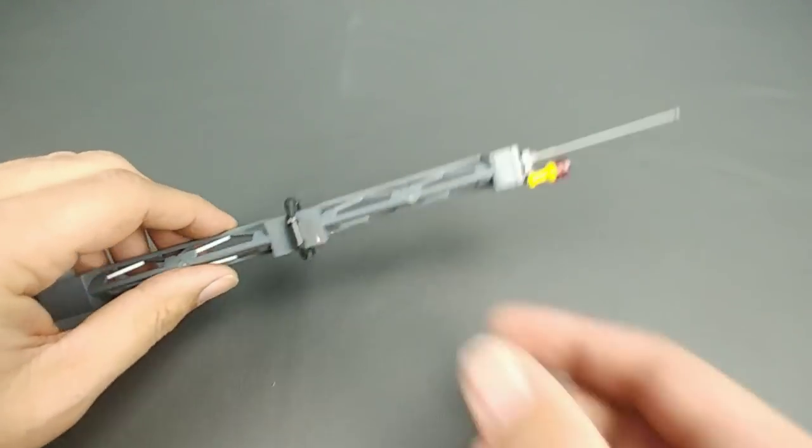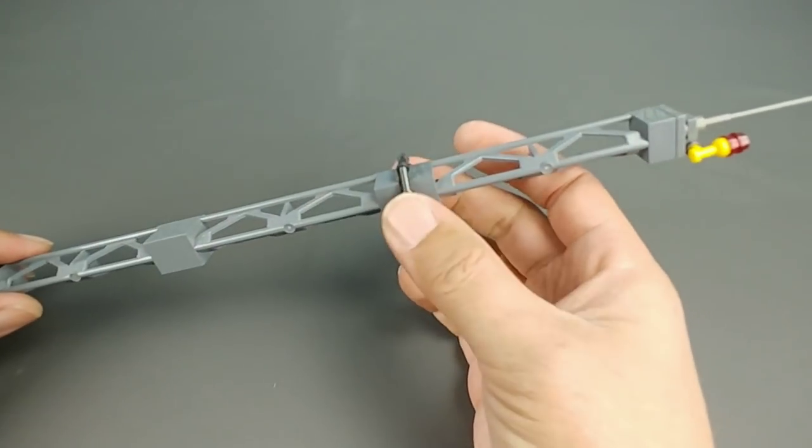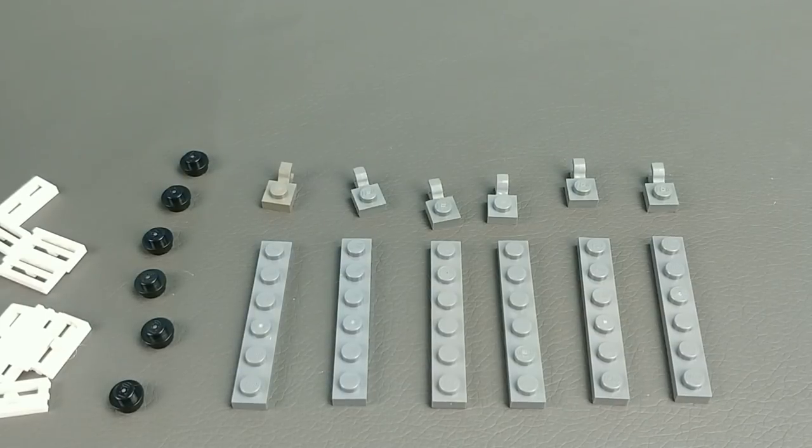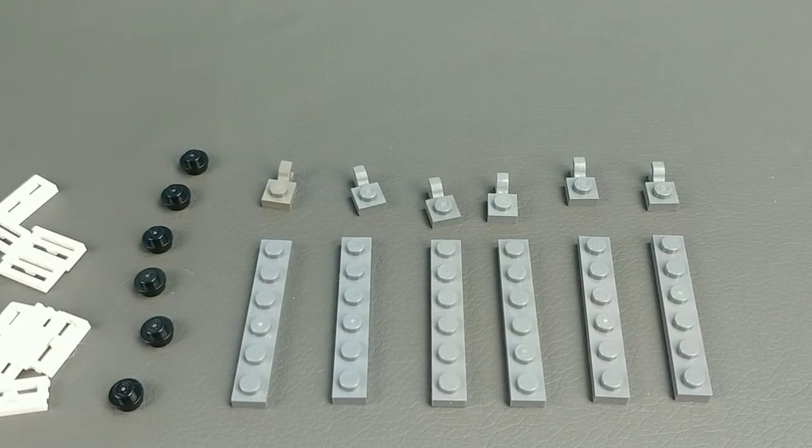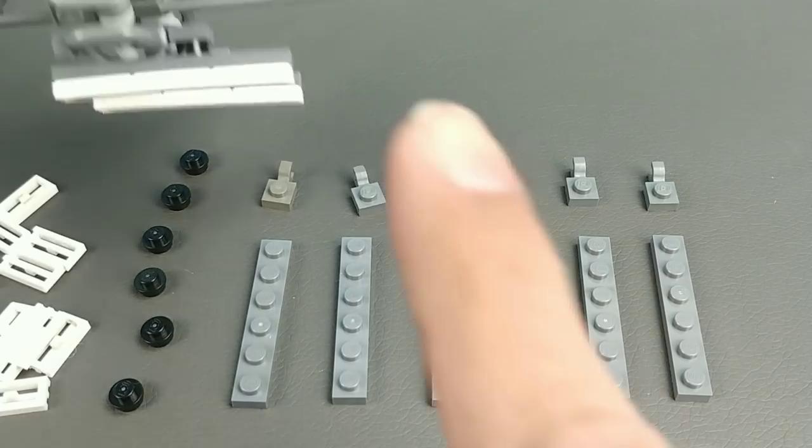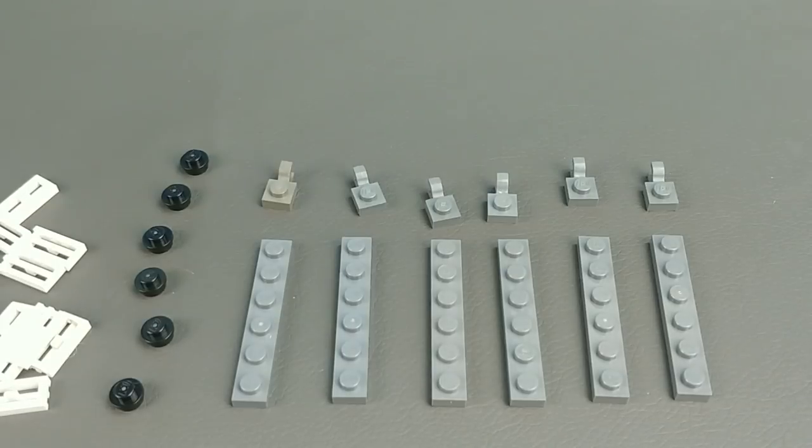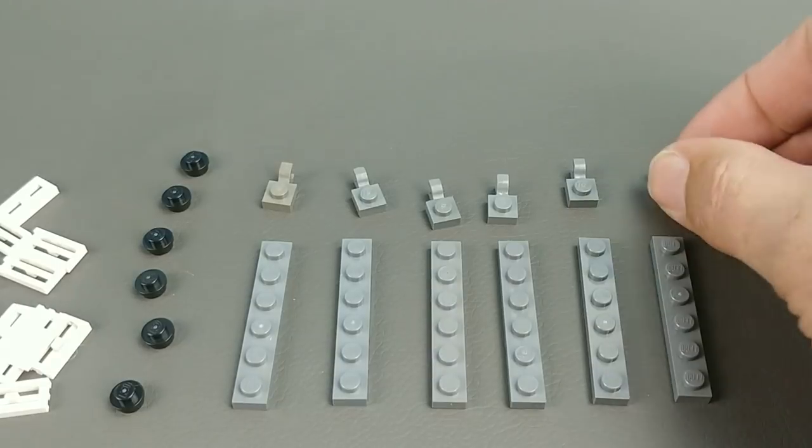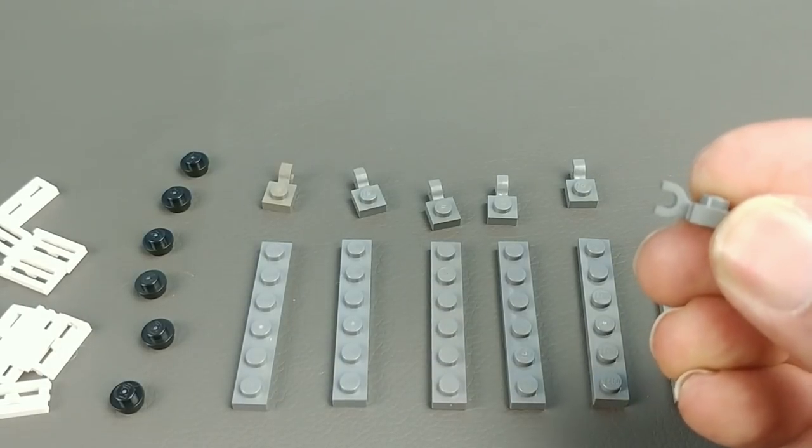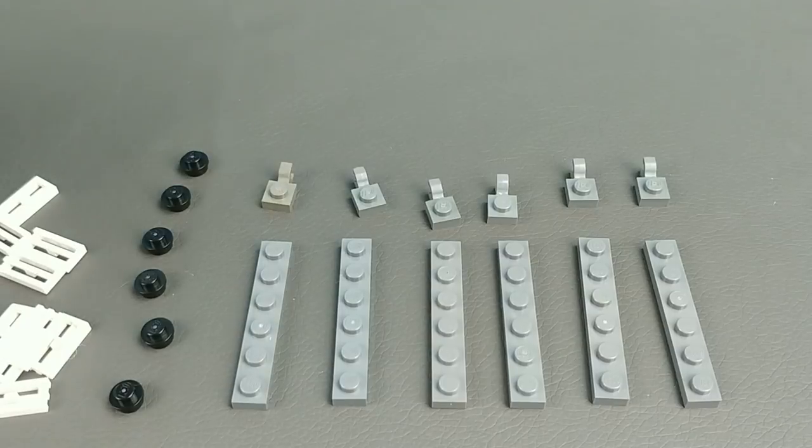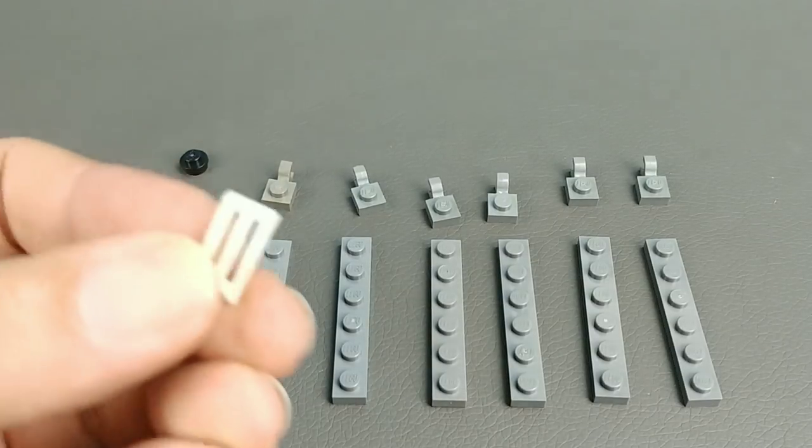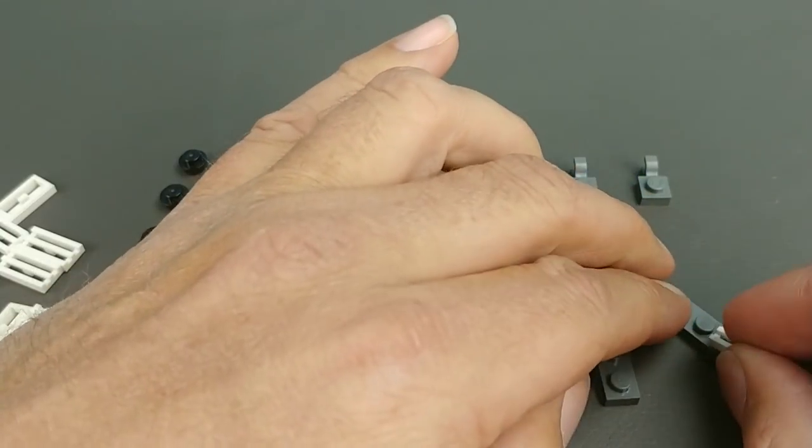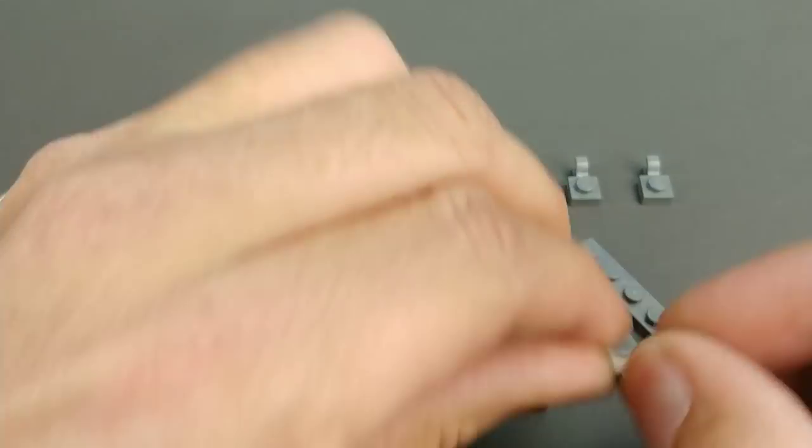So now that gives us our top. Now we're going to start working on the pieces that actually surround this portion of it for the cell phone array. Anyway, here is all the pieces you're going to need. We're going to start with just making all these pieces here. We're going to need six one by six plates, six of these modified plates with the clip on the side of it, six one by one rounds, and eighteen of these little grill pieces.